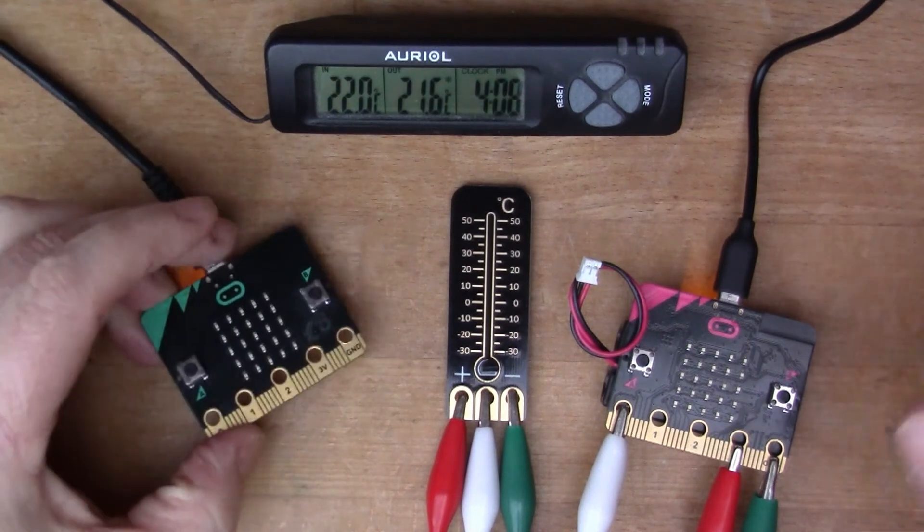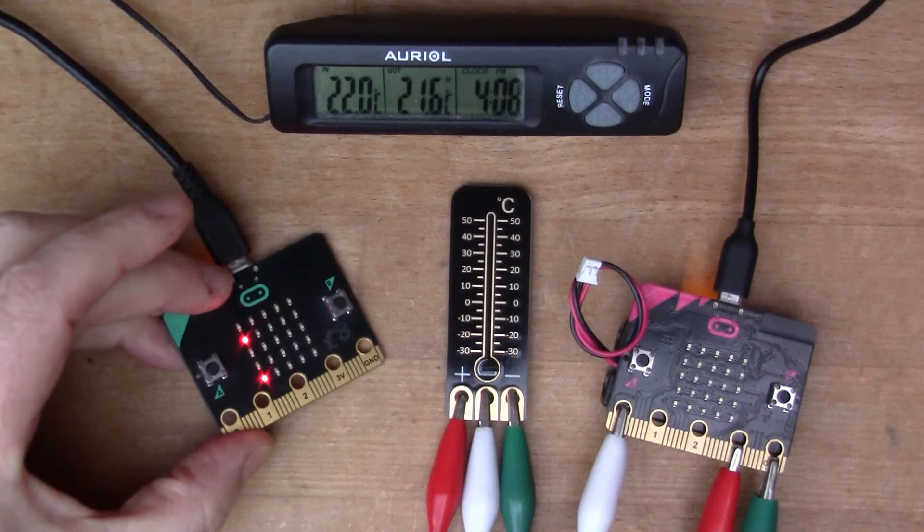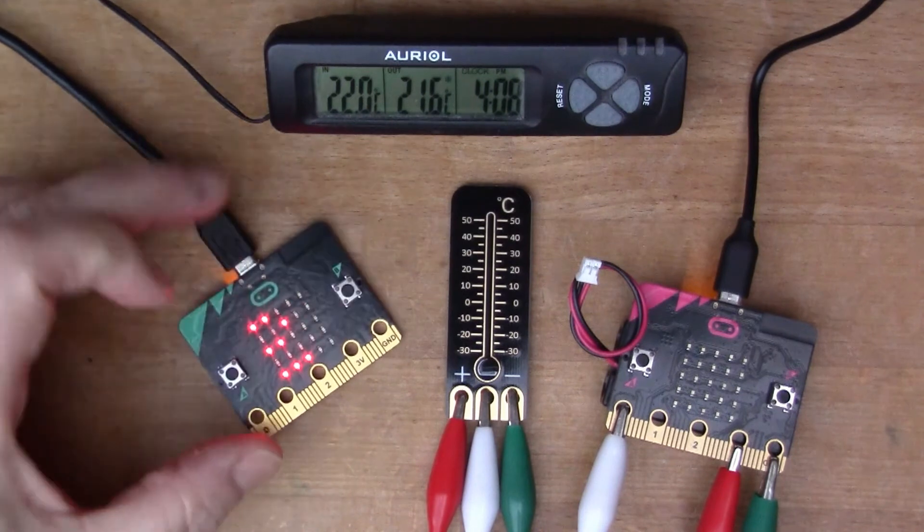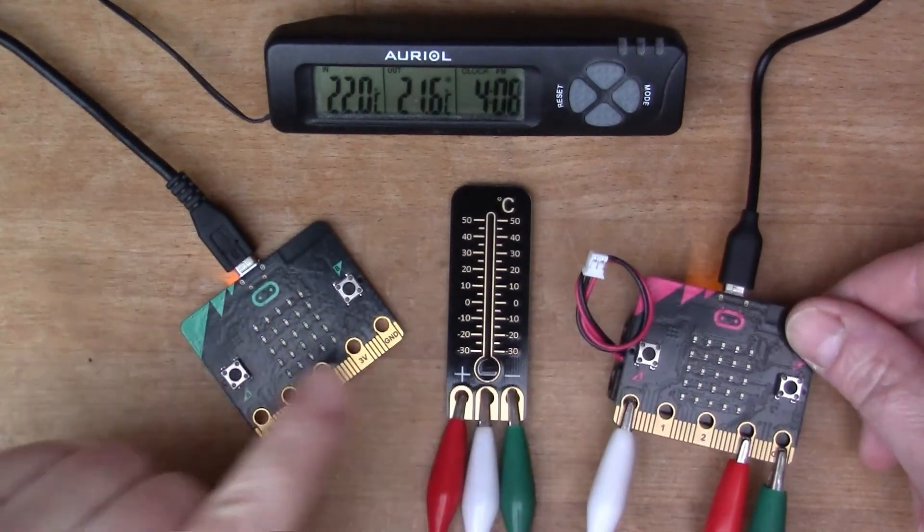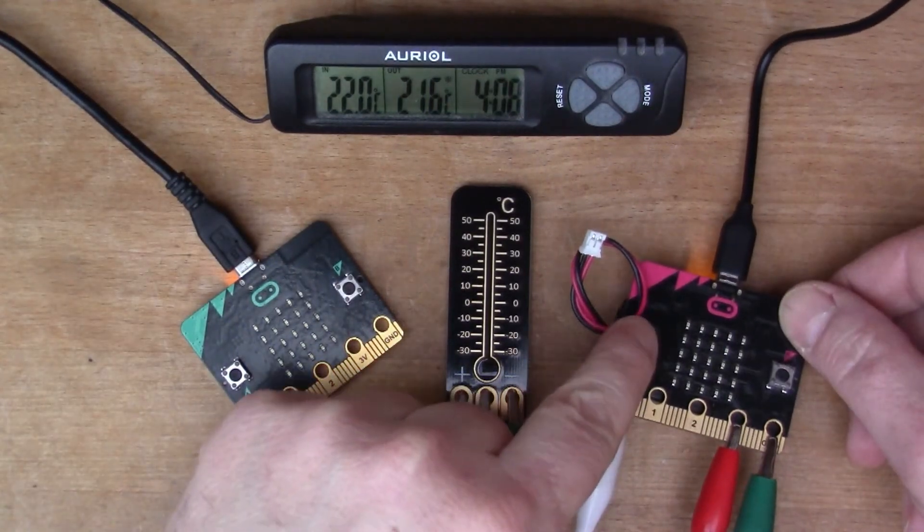If we press the left hand one, this is the internal reading, so that's saying 22 degrees. That's a good match for the reading on here. Looking at the TMP36, this is also reading 22.